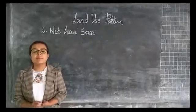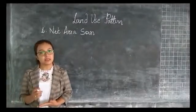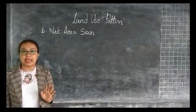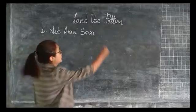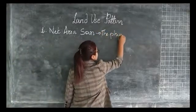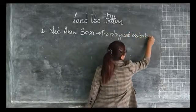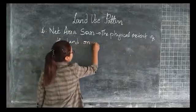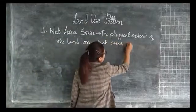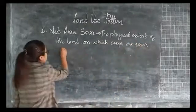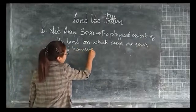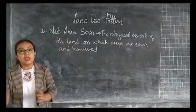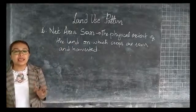Now let us talk about the pattern or the arrangement of the land utilization. The first one is the net area sown — the physical extent of the land on which the crops are sown and harvested. The net area sown has great importance in an agricultural country like ours, that is India.